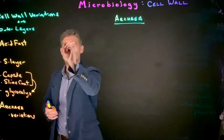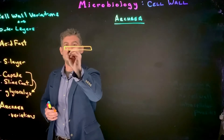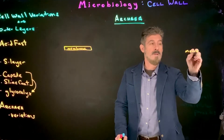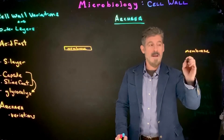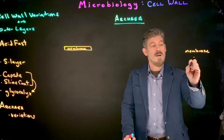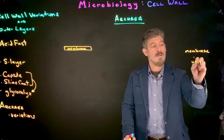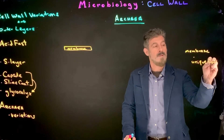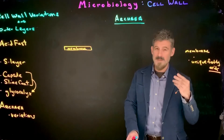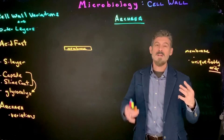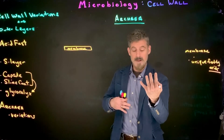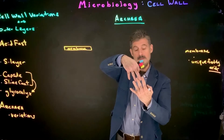An archaea is going to have its cell membrane. As far as the membrane goes for an archaea, it's very similar in structure to our cells or bacterial cells with certain variations. They can have unique fatty acids that are part of the phospholipids, and as a result there could be different types of bonds and branching structures. There can even be bonding of fatty acid tails from one side of a phospholipid bilayer to the fatty acid tails from the other side.